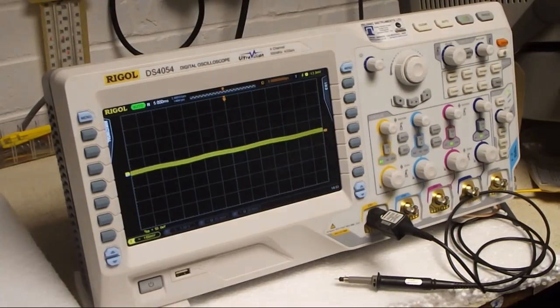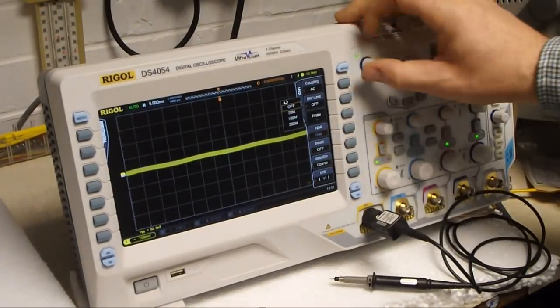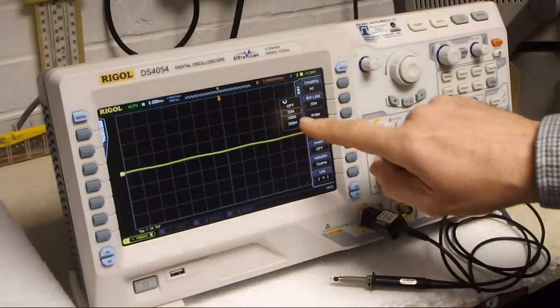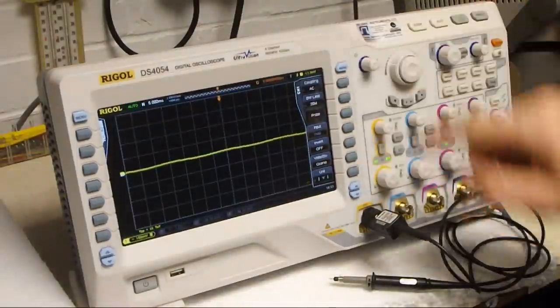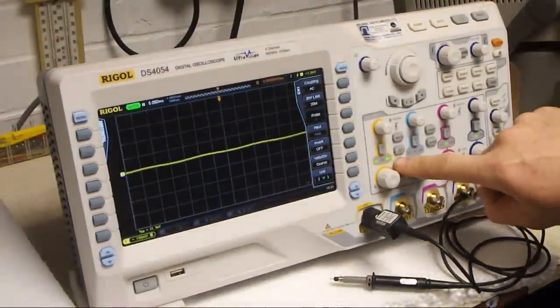It's set like this. The screen shows that it's set and a little light comes on near the input socket for that channel. On this scope, you can set this on a per channel basis. It doesn't have to be the whole four channels.